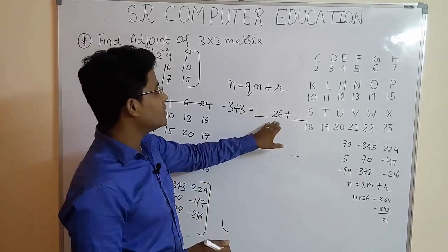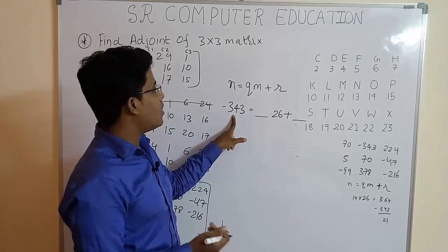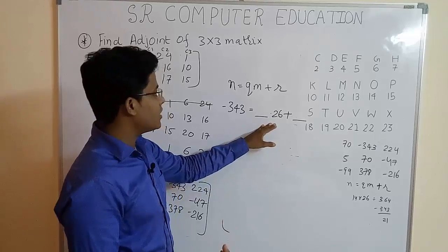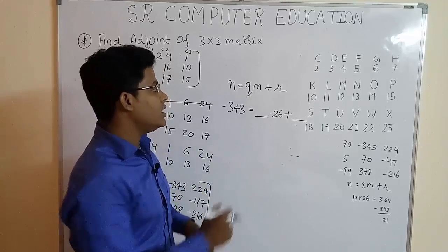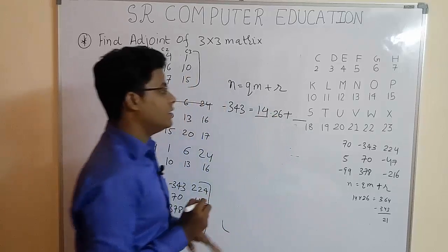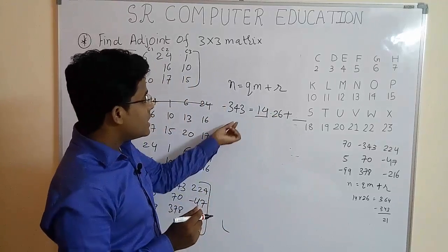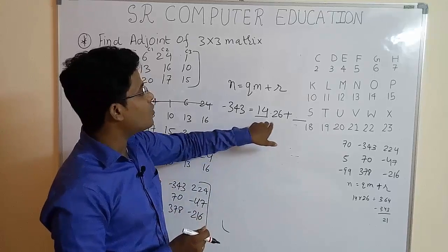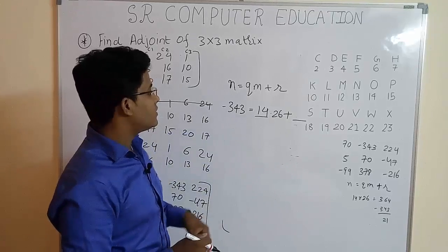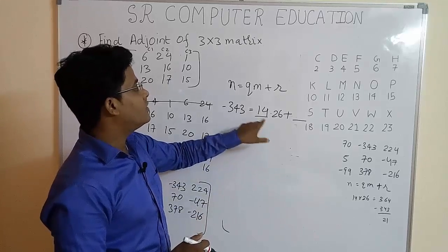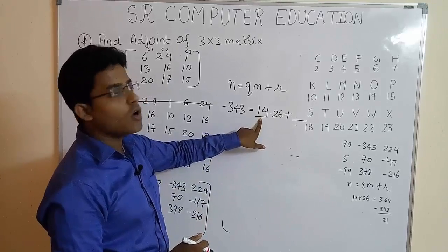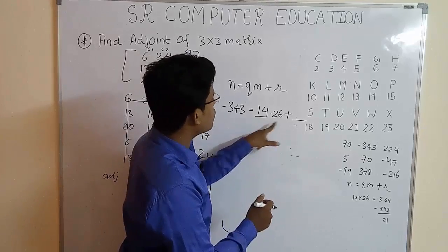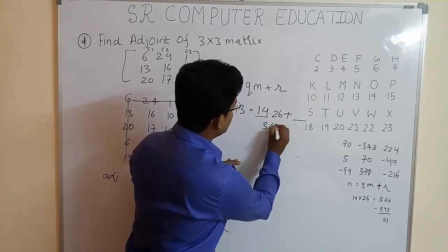Again, 260 is again less. 11 is also not more. 12 will not be more. 13 will not be more. 14, when you multiply this number by 14, you get a number which is little more than this. That is, when you multiply 14 by 26, you get 364. So, we have to stop here because we got a number more than 343. So, 14 multiplied by 26 is 364.